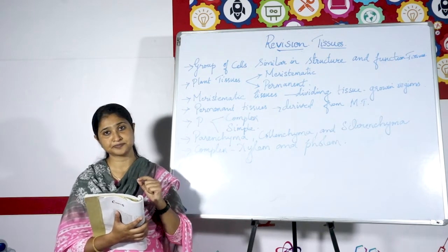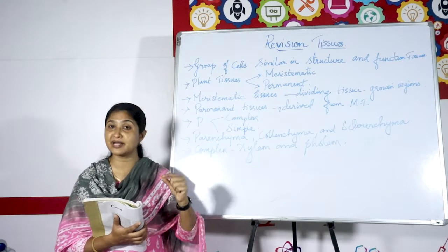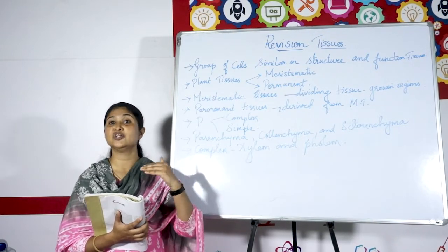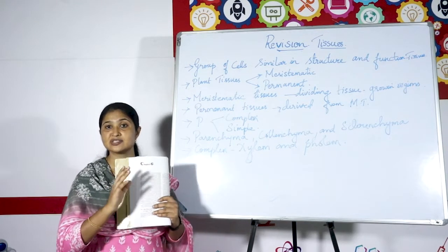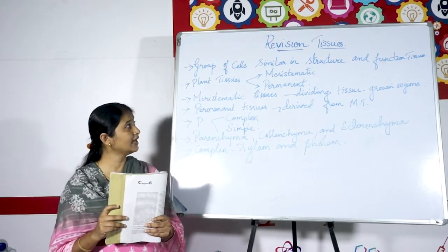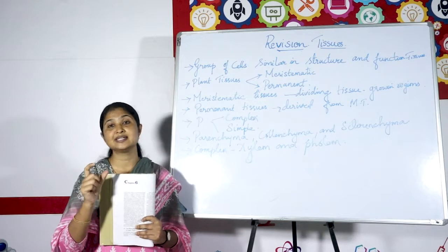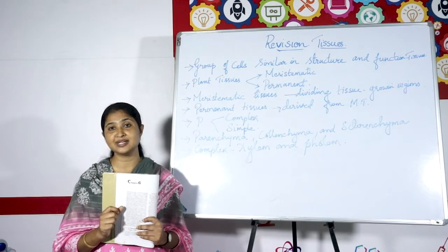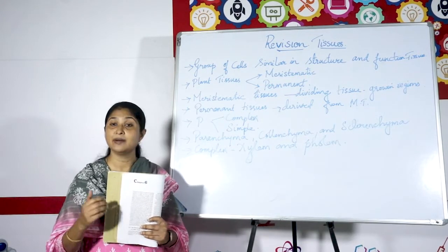The apical meristem is present at the tip of the stem and the root. Intercalary meristem is present below the nodes. Lateral meristem is present on the sides and it increases the width of the plants. So meristematic tissues are present in the growing regions, divided into three types: apical, lateral, and intercalary meristems.